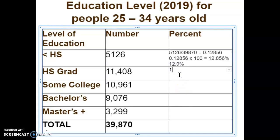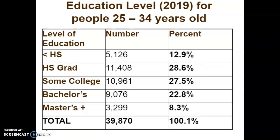I can go through and do that for every one of these categories. So 11,408 divided by 39,870 — using my calculator I get 0.2861. Then I take that decimal and multiply it by 100, so now I have 28.61 percent. Rounded to the nearest tenth, the digit in the hundredths place is a 1, so the six will just stay. I went ahead and did all of these already, so there they are.